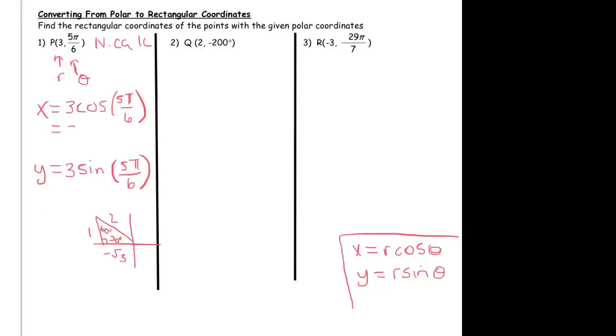And so our x-coordinate would be 3. And the cosine of 5π over 6 is negative root 3 over 2. And our y-coordinate would be 3 times the sine of 5π over 6, which is 1 over 2. And so as our final answer, we would write our x-coordinate is 3 times negative root 3 over 2. We can simply leave it as negative 3 root 3 over 2, comma, 3 times a half is 3 halves. So that's all done without the calculator.